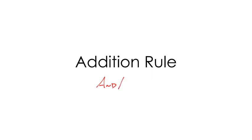In this video we're going to look at the addition rule, and the addition rule is really about AND and OR probabilities. What's the probability of A and B happening? What's the probability of A or B happening?